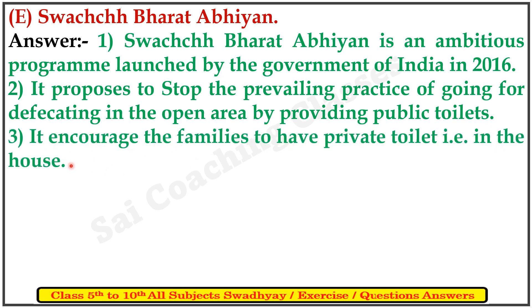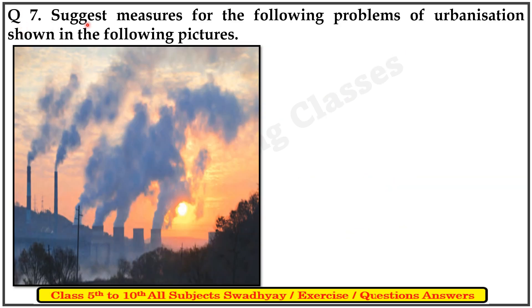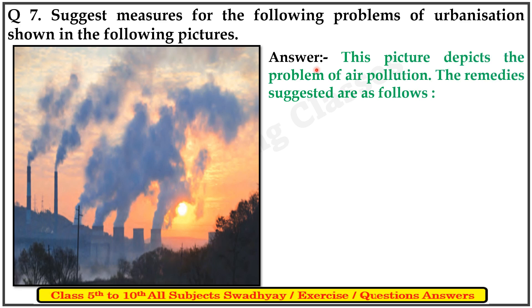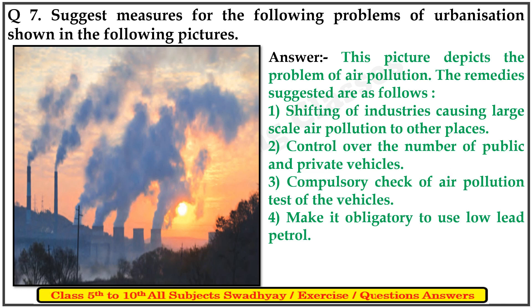Question 7: suggest measures for the following problems of urbanization shown in the pictures. This picture depicts the problem of air pollution. The remedies suggested are: first, shifting of industries causing large-scale air pollution to other places.